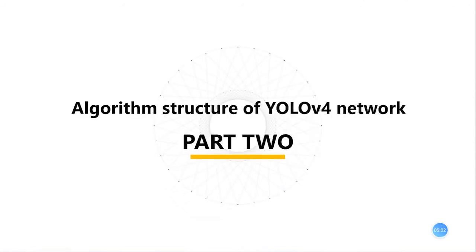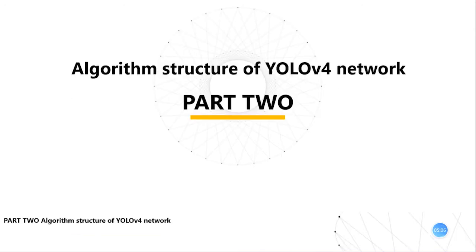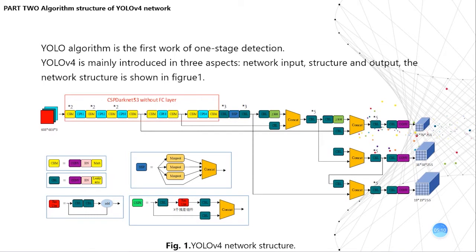Part 2 is the Algorithm Structure of YOLO V4 Network. YOLO algorithm is the first work of one-stage detection — a target detection system based on a single neural network proposed by Redmon and Farhadi in 2015, published at CVPR in 2016. The two main successors, YOLO V2 and YOLO V3, further improved accuracy and speed. After further improvements, the YOLO V4 algorithm appeared. YOLO V4 is mainly introduced in three aspects: network input, structure, and output, as shown in Figure 1.